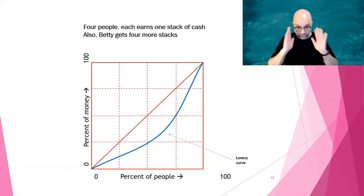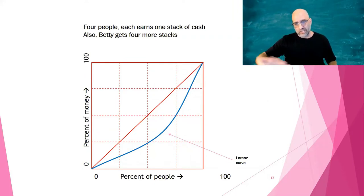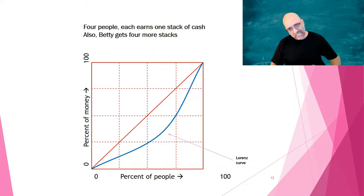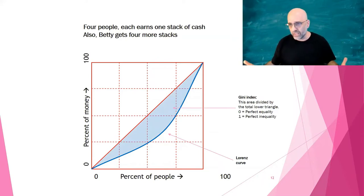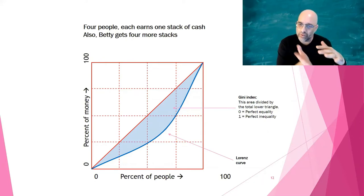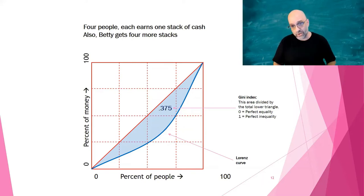We're going to call that curved line the Lorenz curve, after economist Lorenz from the early 20th century. The further that line is from the diagonal, the more inequality there is. In our simple example with 16 squares overall and eight in the lower right triangle, that curved line takes up about three of those eight squares. We call that area the Gini index — it's the percentage of the lower right triangle that is above the Lorenz curve, the blue shaded area. In this case it's about three-eighths, or about 37.5%, so our Gini index is 0.375.